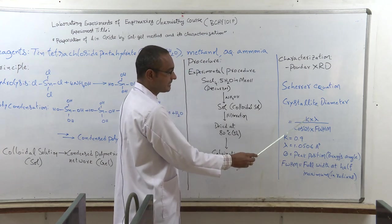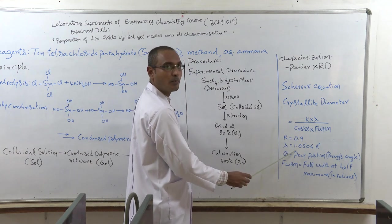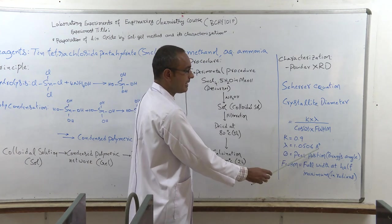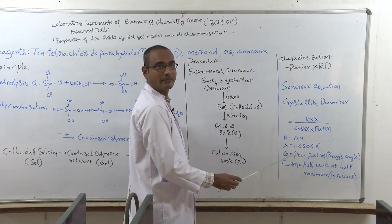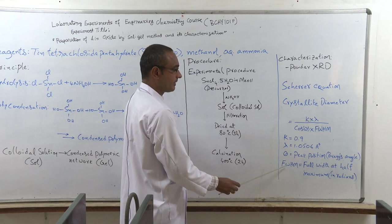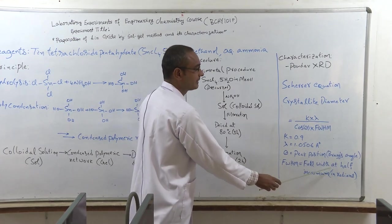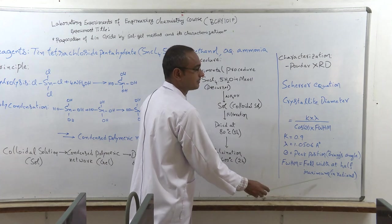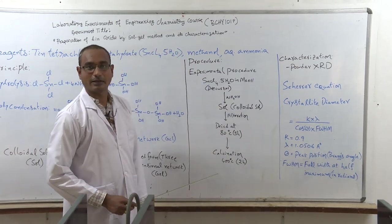The crystallite diameter is nothing but K into lambda divided by cos theta into FWHM, where K is equal to 0.9 and lambda is equal to 1.0506 Angstrom, and theta is the peak position in diffractogram. It is also called as Bragg's angle. FWHM is full width at half maximum, which is in radians, that we will get it from the diffractogram.